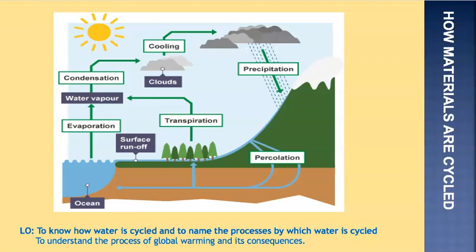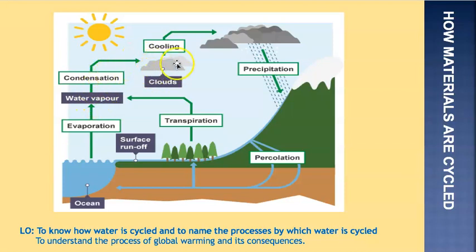Water will evaporate from the ocean into the atmosphere — that's your first process — and it will become water vapour. As it cools down, condensation will occur, which will mean that it will become clouds. The continual cooling of those clouds causes precipitation to occur, for example rainfall. So to summarise: evaporation of water from the oceans produces water vapour, condensation causes the water to be stored within the clouds, and then the water falls from the sky — which is called precipitation.